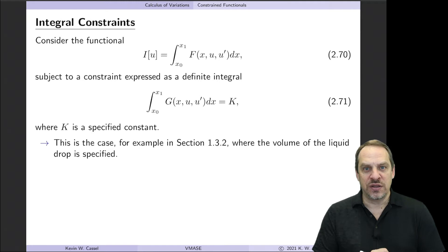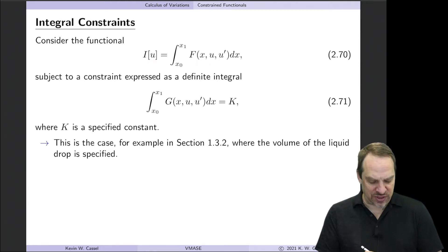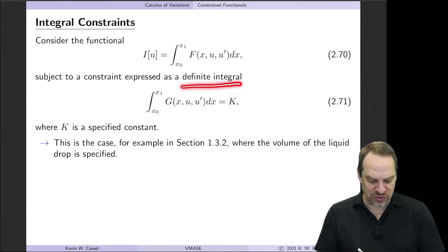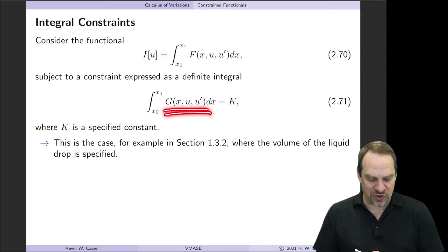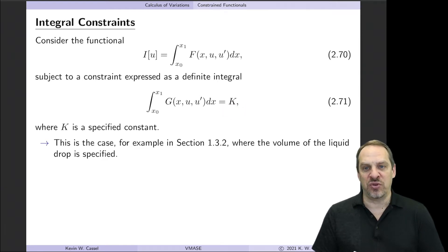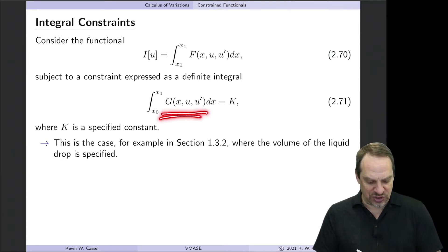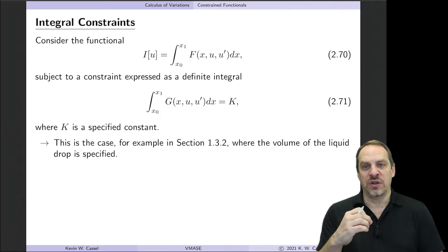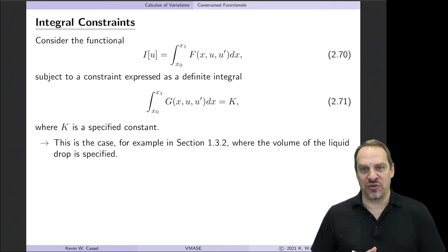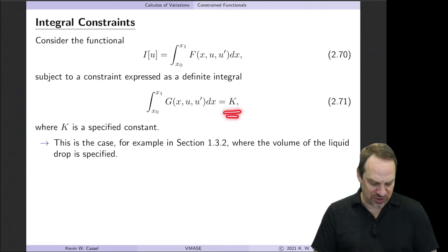Let's say we have a functional I of a single dependent variable u of a single independent variable x, where capital F is a function of x, u, and u prime. We also have a definite integral as a constraint — an integral over the domain from x₀ to x₁, the same domain as the functional. There's an integrand involving x, u, and u prime, set equal to some known constant capital K. For example, K would be the volume of the liquid drop, and capital G would be the expression for the volume of each little sliver integrated to get the total volume.